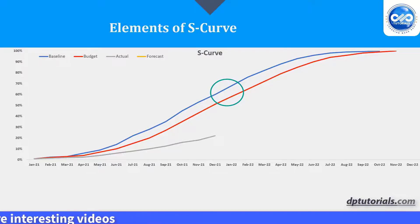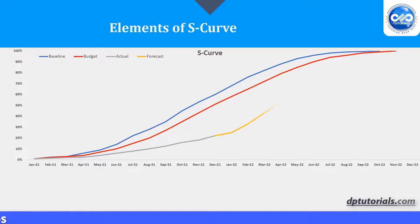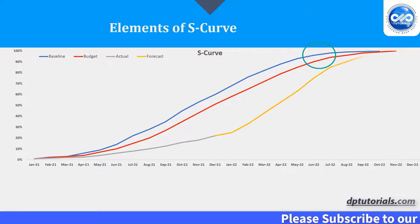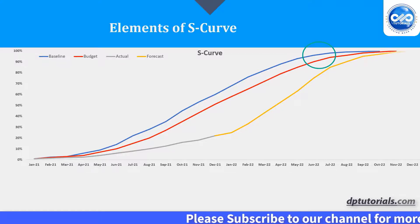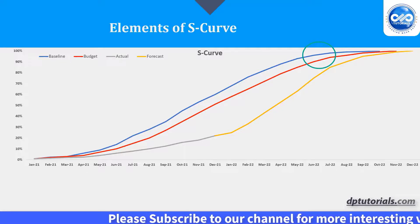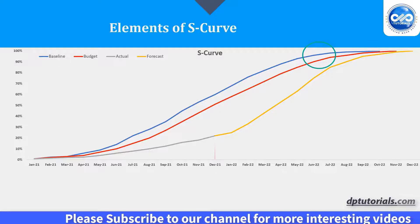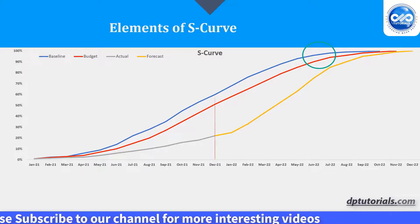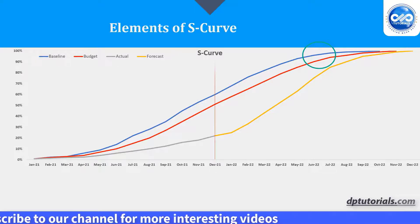After the point of inflection, the growth begins to plateau, forming the upper part of the S, known as the upper asymptote and the mature phase of the project. This is because the project is mostly finished at this point and is winding down, with typically only tasks such as finishing touches and final approvals remaining.